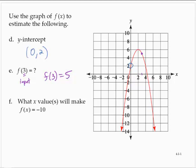What value or values will make f(x) equal to negative 10? Where is the output negative 10? This point and this point. So there are two x values that make that y value negative 10. Negative 2 and a positive 6.